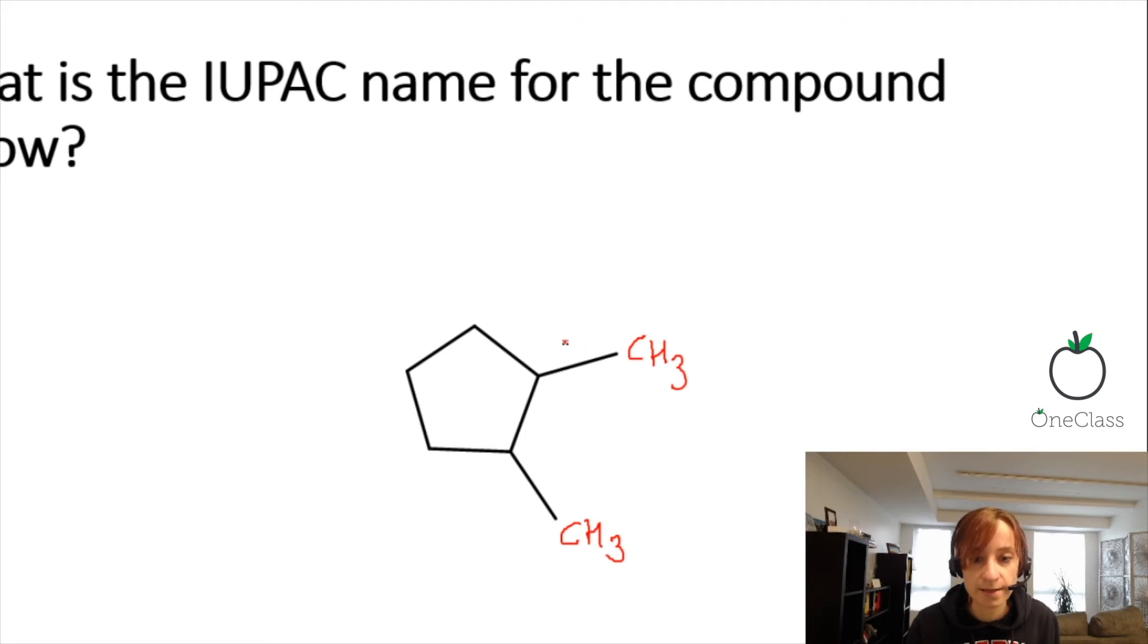In this case, the longest linear chain would be to start with the carbocycle, the cyclopentane. If we're going to start with one here, because we want one to include a methyl group.